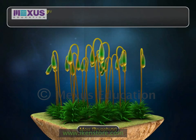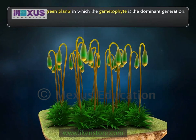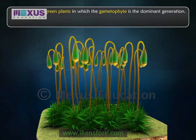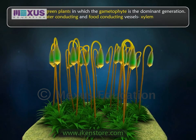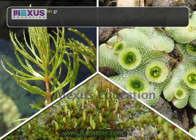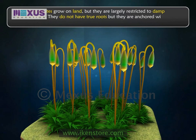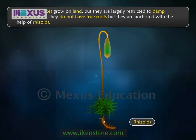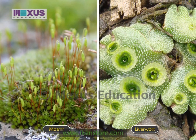Bryophytes are green plants in which the gametophyte is the dominant generation. They lack the water conducting and food conducting vessels, xylem and phloem respectively. Most bryophytes grow on land but they are largely restricted to damp environments. They do not have true roots but they are anchored with the help of rhizoids. Liverworts and mosses are examples of bryophyta.